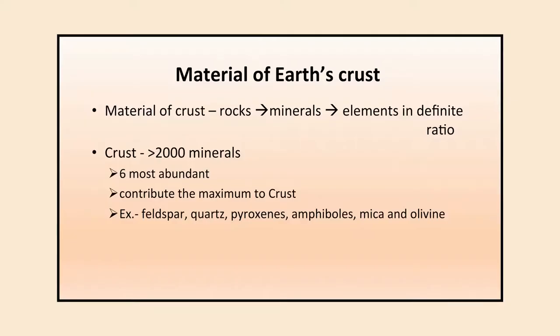The material of the Earth's crust is made up of rocks, rocks are made up of minerals, and minerals are made up of elements in a definite ratio. So elements make minerals, minerals make rocks, and rocks make the uppermost crust. The crust has more than 2000 minerals, of which six are the most abundant: feldspar, quartz, pyroxenes, amphiboles, mica, and olivine.